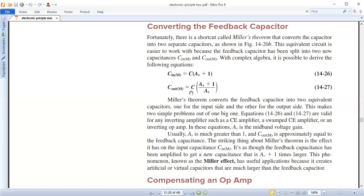The striking thing about the Miller theorem is the effect that it has on the input capacity. It's as though the feedback capacity has been amplified to get new capacity that is AV plus one times larger. This phenomena is known as Miller effect. Input capacity has the usual application because it creates artificial or virtual capacity that are much larger than the feedback capacitor.